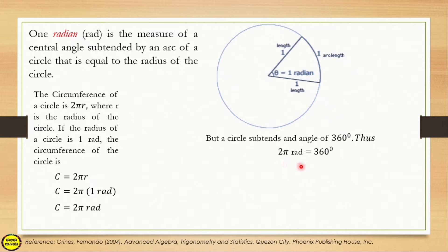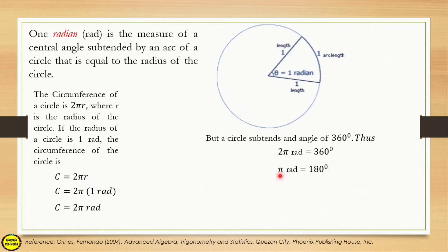What is the equivalent of π? Since π is half of 2π, then π radians is equal to 180 degrees. Now if we want just 1 radian, what is its equivalent? Just like in algebra, since we want the radian alone and it has π with it, we divide both sides of the equation by π. So 1 radian is equivalent to 180 degrees over π.